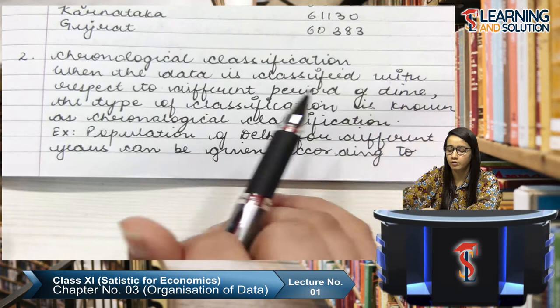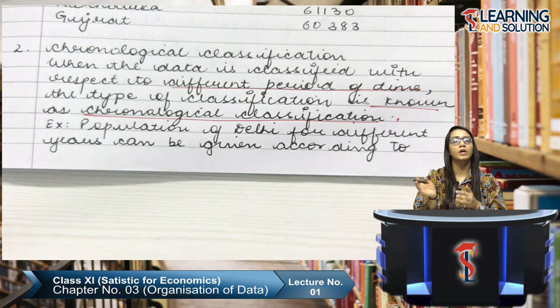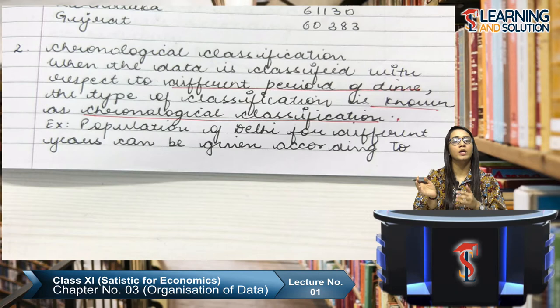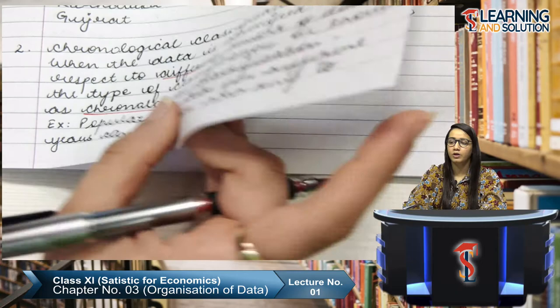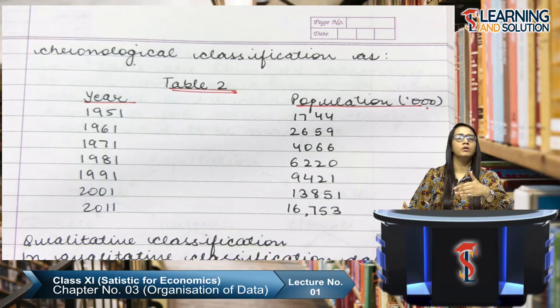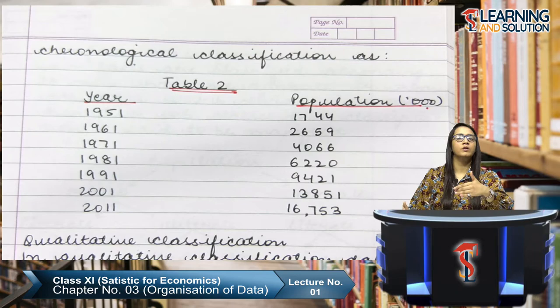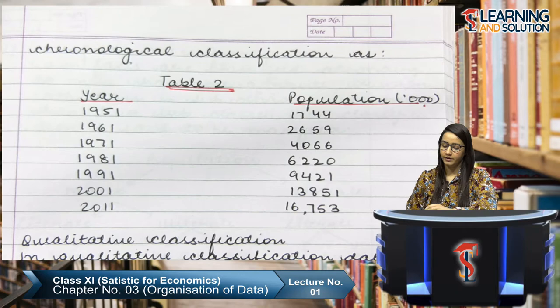The second basis is chronological classification — when data is classified with respect to different periods of time, it is known as chronological classification. Here we classify data time-wise. For example, the population of Delhi for different years can be shown year-by-year. Table 2 shows Delhi's population from 1951 to 2011, as the first post-independence census was 1951 and the latest was 2011. Classifying population year-wise is called chronological classification.